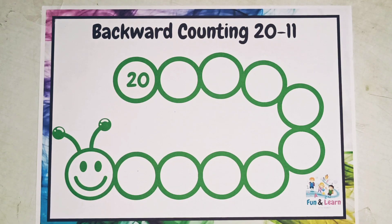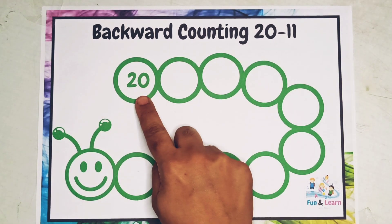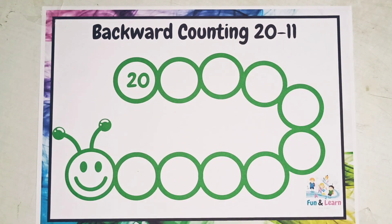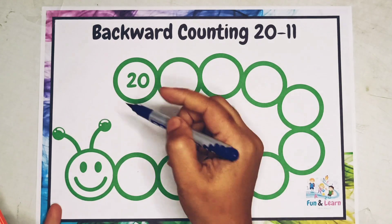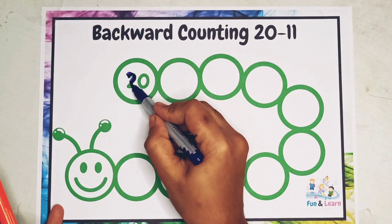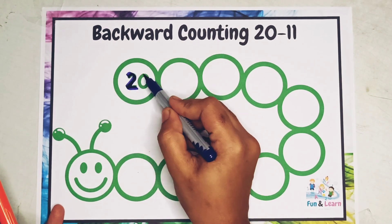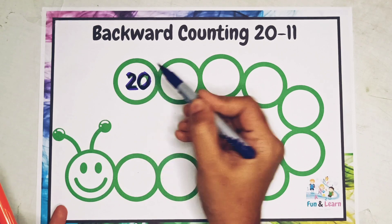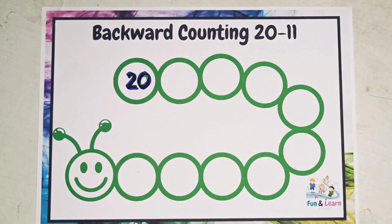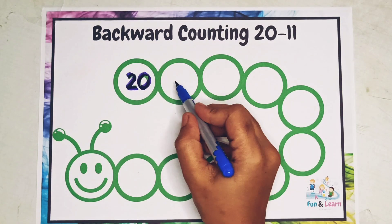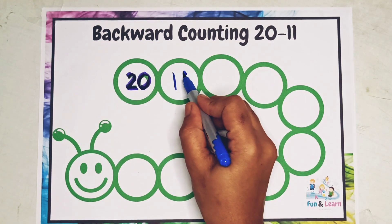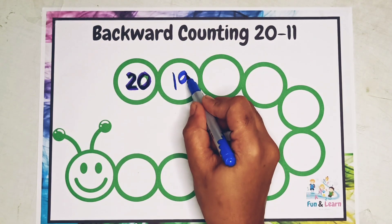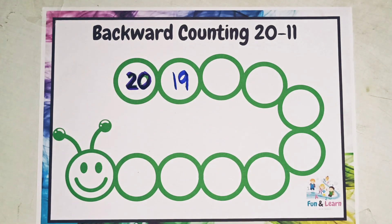Hello kids! Let's count backwards from 20 to 11 today. The first number in backward counting will be the largest number — that's 20. Then comes 19.